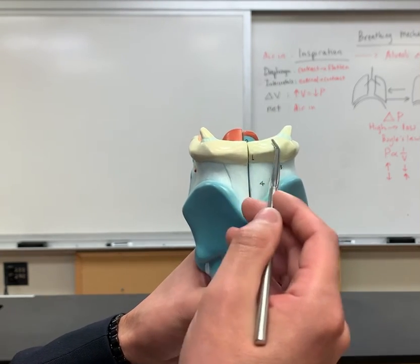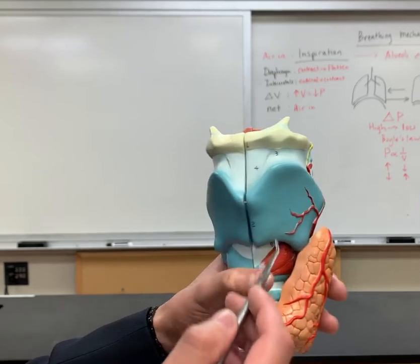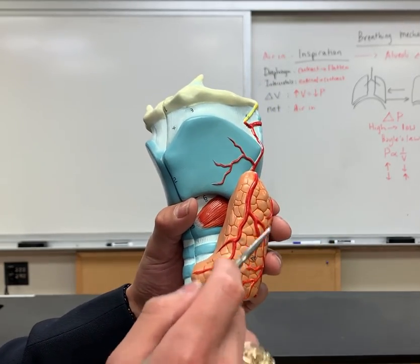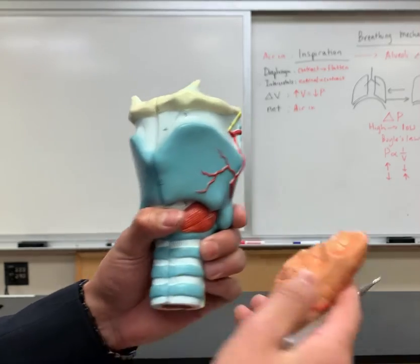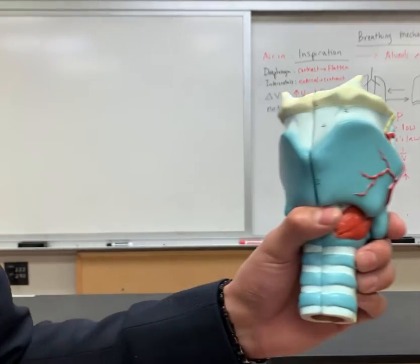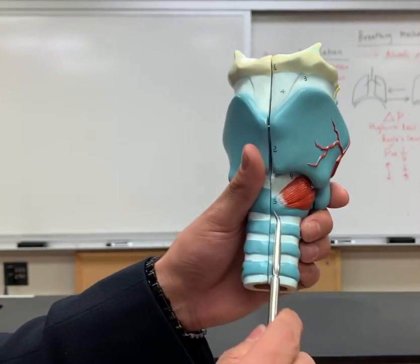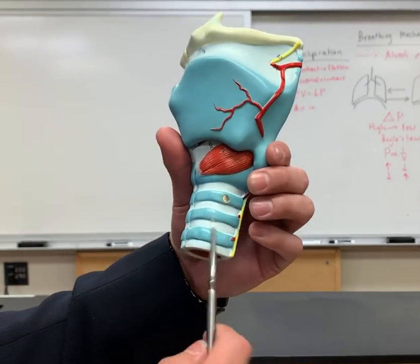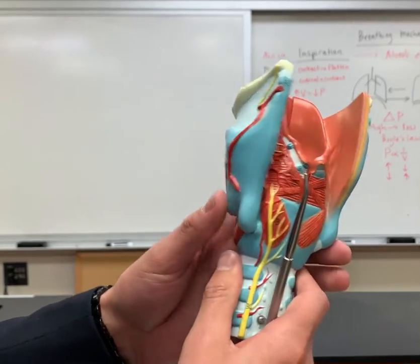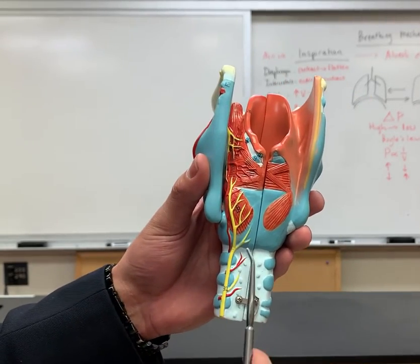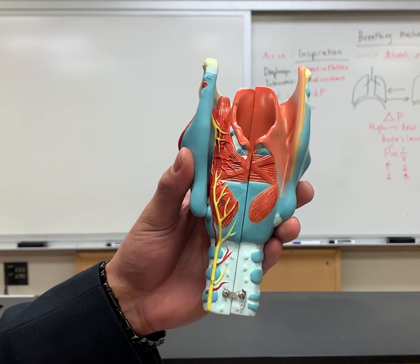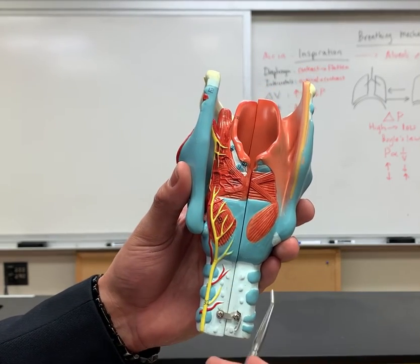This here is the hyoid bone, this is the thyroid cartilage, and then this is the cricoid cartilage. You have this which is the thyroid gland, and then on the backside this is the parathyroid gland. You also have the trachea which is down this way, and then if we turn this model to the backside you can see the posterior membrane wall of the trachea and then you can also see the cricoid.